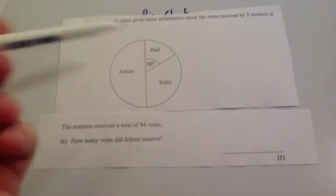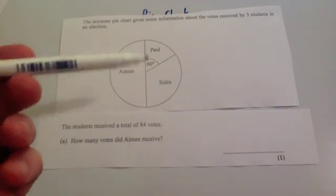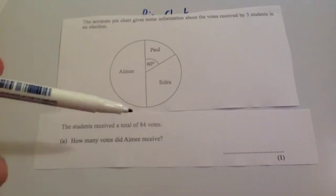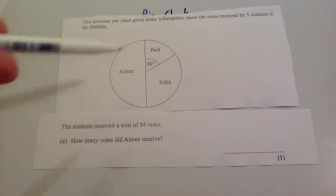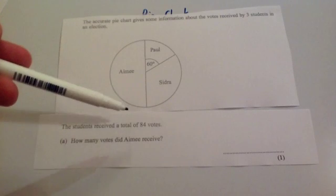This time we've got another pie chart. The pie chart gives information about the votes received by 3 students in an election. We've got Amy, Paul, and Sidra. The students received a total of 84 votes. So this pie chart represents 84 votes in total. It says, how many votes did Amy receive? Well, as you can see, Amy is half of the pie chart.